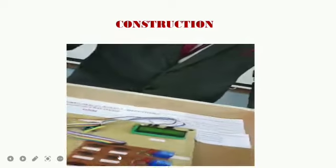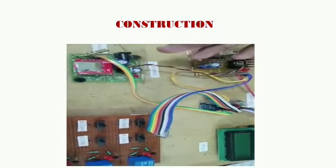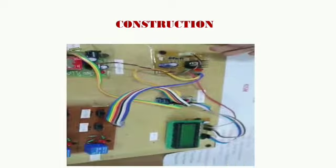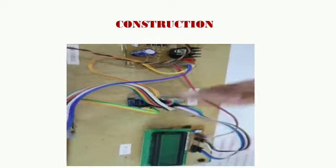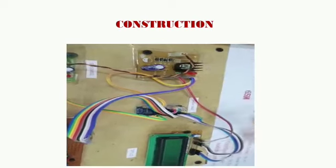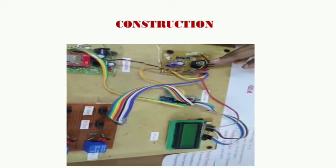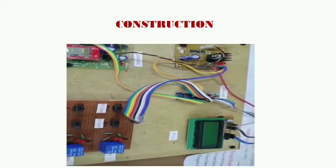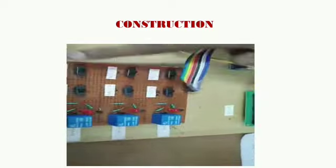Here is the GSM module, which we have used for sending messages from our project to mobile. This is the power supply, which supplies power to the relays, LCD, and Arduino. This is the Arduino and this is the display, which displays the fault location. These are the relays and these are the loads.